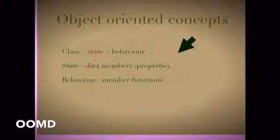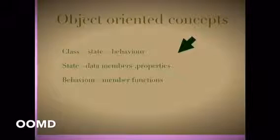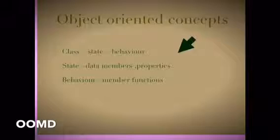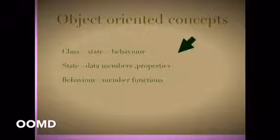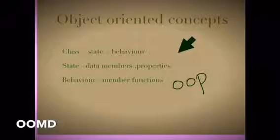First of all we study about object-oriented concepts. You need to know what a class is, and what state and behavior are. If you consider a class, it is state and behavior together. State is the data members or the properties. Behavior means member functions. This you have seen in object-oriented programming, where a class contains member functions as well as the data members.